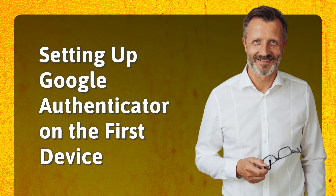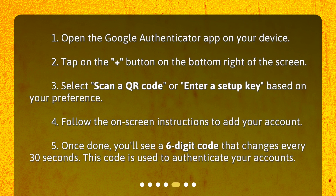Setting up Google Authenticator on the first device. 1. Open the Google Authenticator app on your device. 2. Tap on the plus button on the bottom right of the screen. 3. Select scan a QR code or enter a setup key, based on your preference.